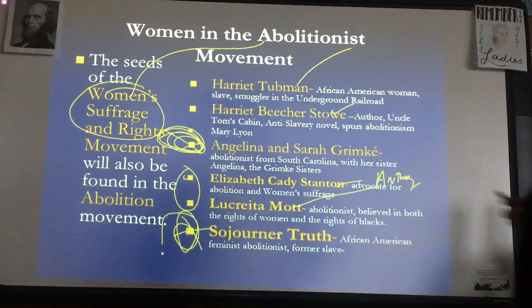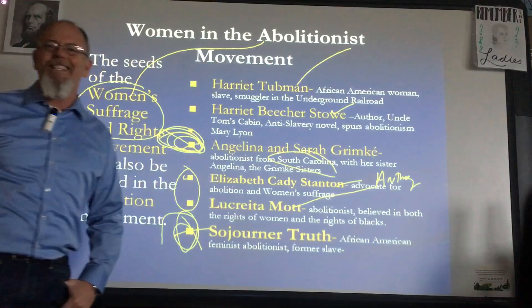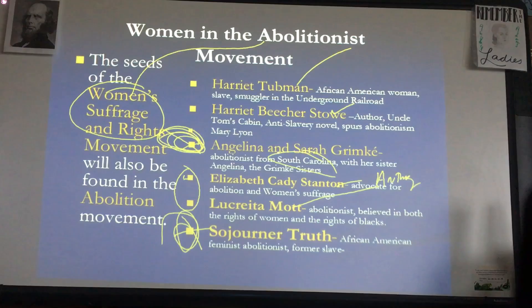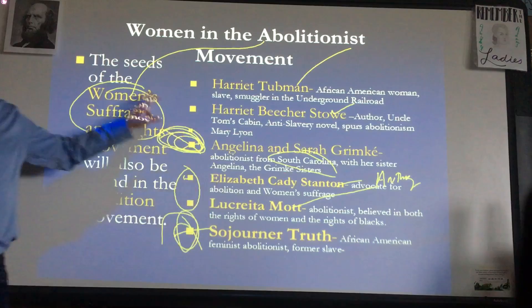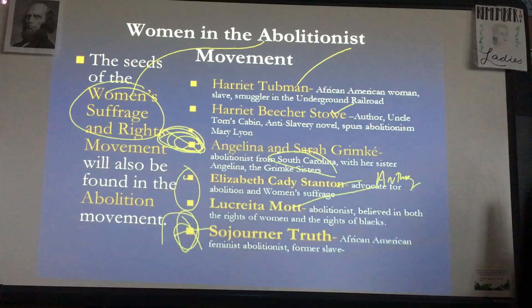The other ones to know are Angelina and Sarah Grimké — what's special about them is they're abolitionists from the South, which is rare. They come out as abolitionists and are basically forced to leave or face consequences. And remember Elizabeth Cady Stanton and Susan B. Anthony — they were early suffrage and women's rights advocates. Remember the Seneca Falls Convention and the Declaration of Sentiments.